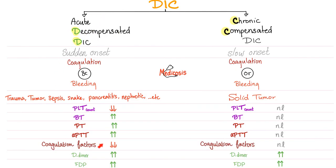Acute DIC is an acute emergency. We have run out of platelets, so the platelet count is low, which prolongs the bleeding time. PT and PTT are high because we have consumed our coagulation factors. D-dimer and fibrin degradation products are high because of activated fibrinolysis. In chronic DIC, it's slow — we have time to compensate and regenerate our platelets, so platelet count is normal, bleeding time is normal. We have time to make new coagulation factors, so PT and PTT are also normal. The only abnormal finding is elevated D-dimer and fibrin degradation products.